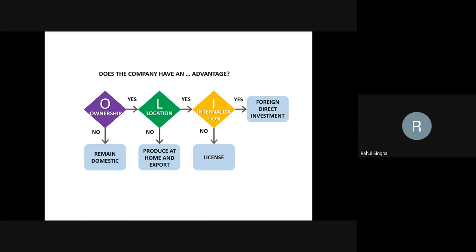So do we have any kind of location which gives us a strategic benefit? If the location we are considering for manufacturing gives us some kind of strategic advantage and the answer is yes, we move towards the next step. If the answer is that the location does not give us any kind of strategic advantage, then it's better to stick to the home country, manufacture there, and start exporting to other countries. So if you don't have any kind of location advantage, you need to manufacture in your home country and export from there. But if you have a location advantage, you then need to consider the third step — internalization.